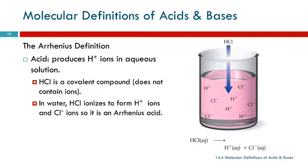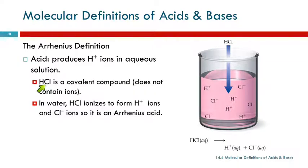There are different definitions for acids and bases, and we need to be able to apply them. The Arrhenius definition is that an acid produces hydrogen ions in aqueous solution. Something like HCl — we identify it as an acid because the formula starts with H, and we name it hydrochloric acid. It's a covalent compound with no ions; it's a covalent bond between hydrogen and chlorine. But when you put it into water, it ionizes and forms hydrogen ions and chloride ions. Because it forms hydrogen ions in water, the Arrhenius definition says this is an acid — anything that produces hydrogen ions in water is an Arrhenius acid.